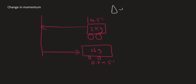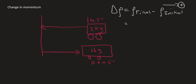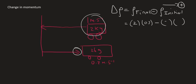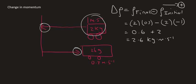To work out the change in momentum, that is the final momentum minus the initial momentum. Choosing right as positive: the final momentum is mass times velocity, so 2 multiplied by 0.3 — positive because it's going right. Then minus the initial, which is mass 2 times velocity 1, but that object was moving to the left, so I put negative 1. Doing the calculation gives 0.6 minus negative 2, which equals 2.6 kg·m/s. Since I got a positive answer and chose right as positive, the change in momentum is 2.6 kg·m/s to the right.